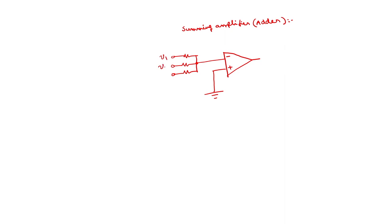I will take a 3-input adder using the operational amplifier in inverting configuration. The three inputs are V1, V2, V3 connected through resistances R1, R2, R3 respectively. The output voltage is V0 and the feedback resistance is RF. To find the output voltage V0 with multiple inputs, we use the superposition theorem, which you may have studied in circuit theory or network analysis.